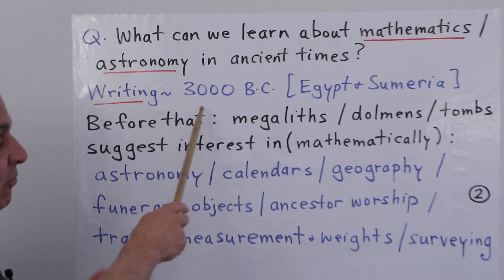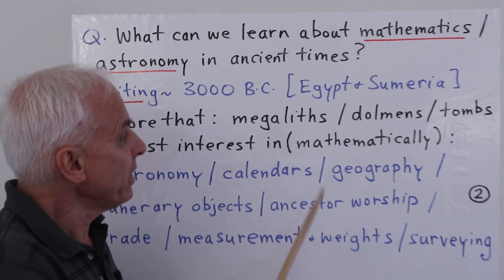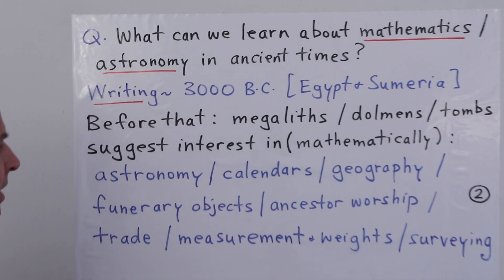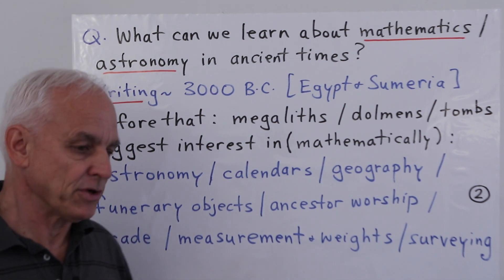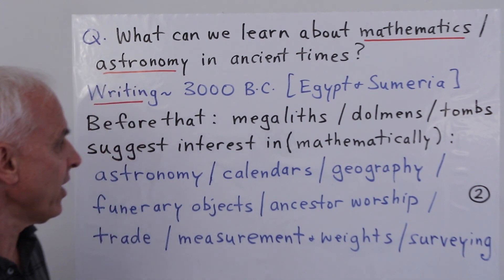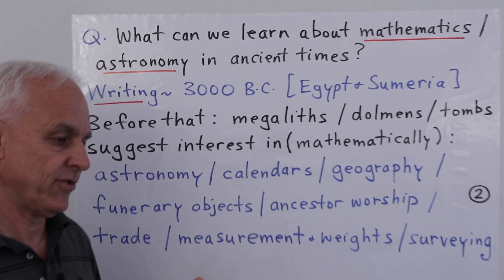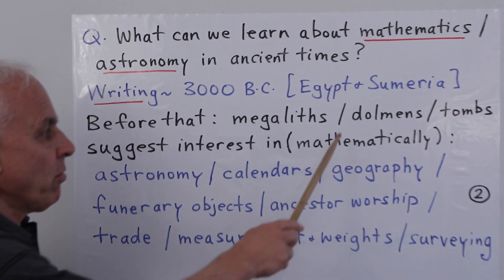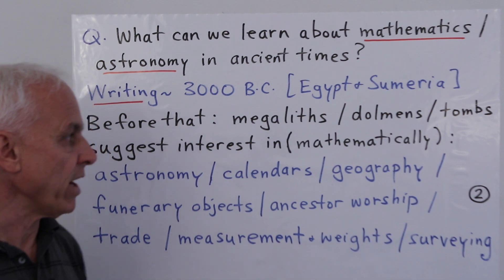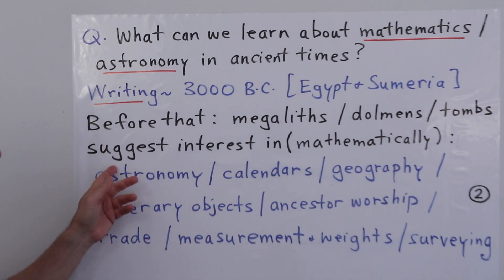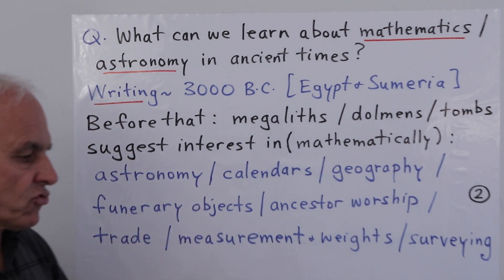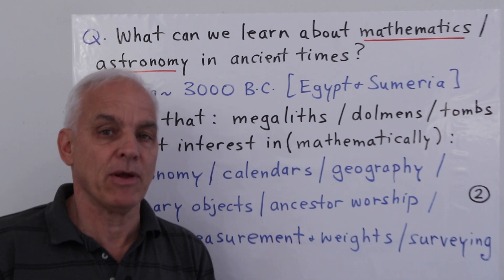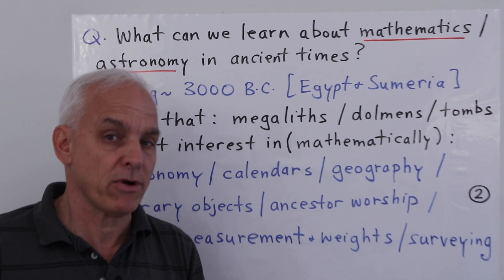Modern writing begins perhaps around 3000 BC, perhaps a little bit earlier, in Egypt and Sumeria roughly around the same time. Before that we do not have written records, but we have a lot of other kinds of evidence. For example, we have megaliths - stone objects which have been erected or created in patterns. We have dolmens, some kind of stone graves. We have lots of tombs more generally. And sometimes there's a strong mathematical suggestion there - some kind of patterns inherent that we can study.